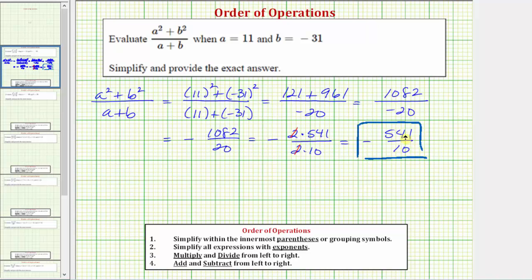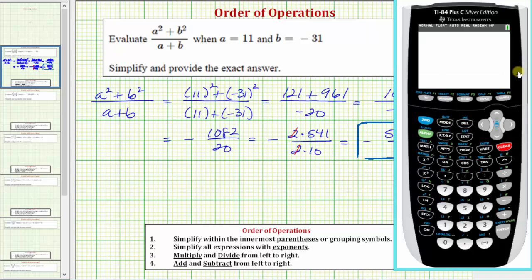Let's check our work on the calculator. To do this, we'll enter the original expression in this form here, but we do need a set of parentheses around the numerator and denominator. So we'll have an open parenthesis for the numerator, and then we'll enter the numerator. So we have 11 squared plus the square of negative 31, closed parenthesis for the numerator.